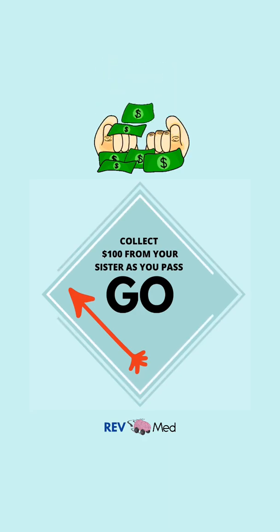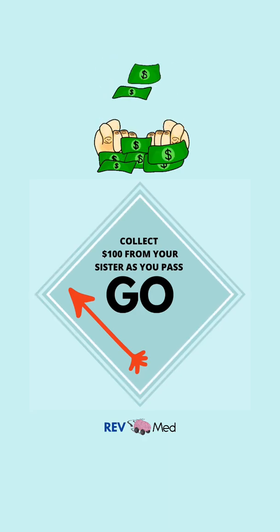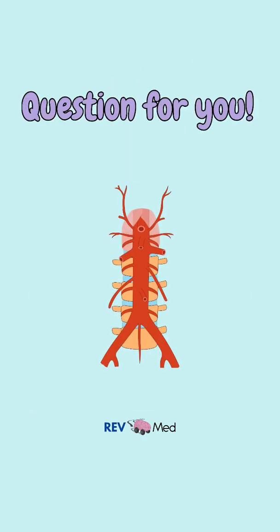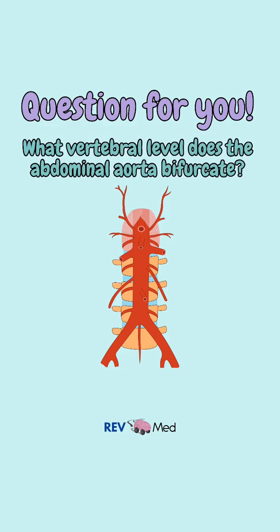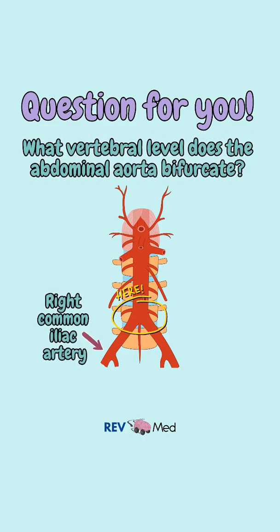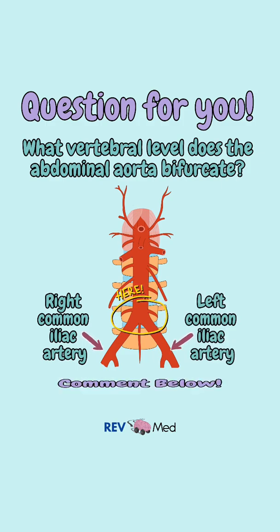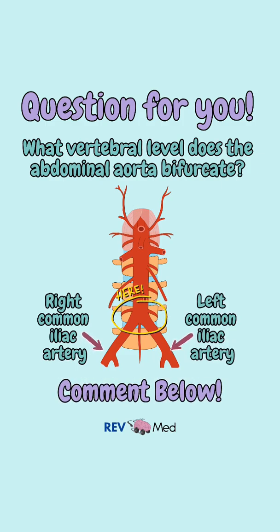Now go collect $100 from your sister! Here's a question for you: could you tell me at what vertebral level the abdominal aorta bifurcates to become the right and the left common iliac arteries? Comment below.